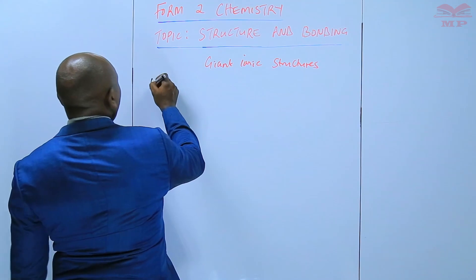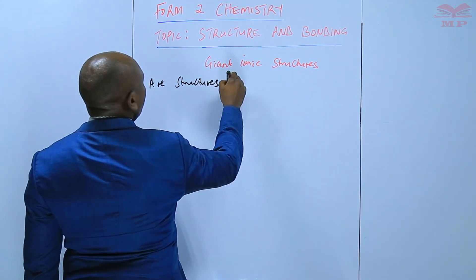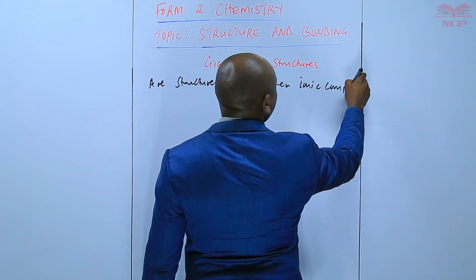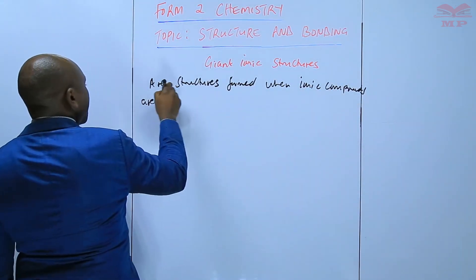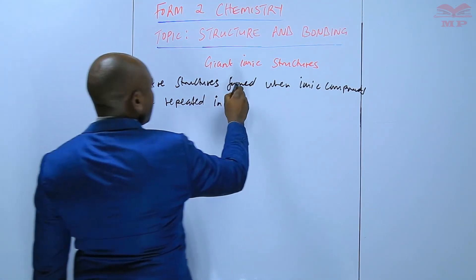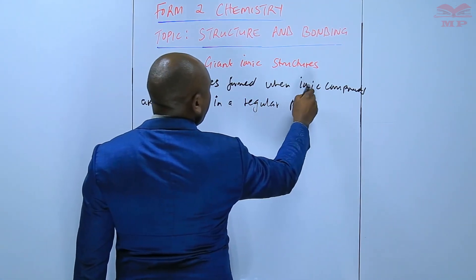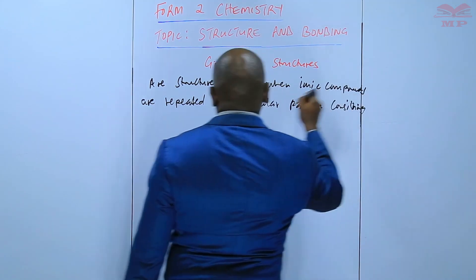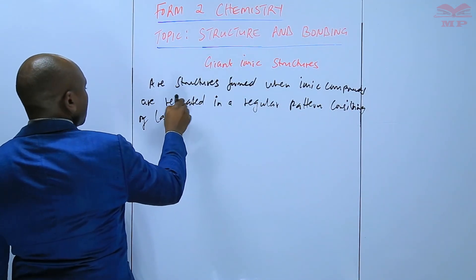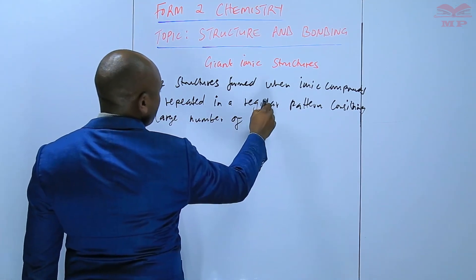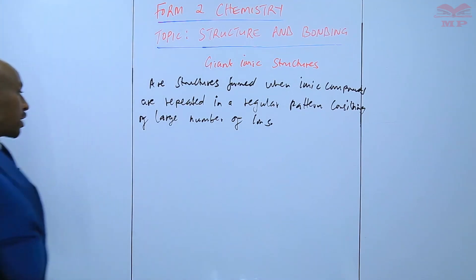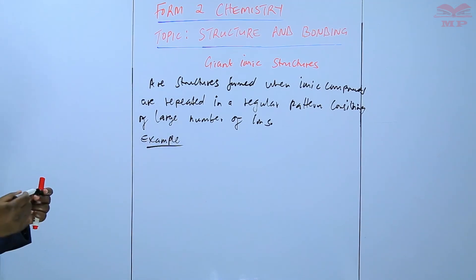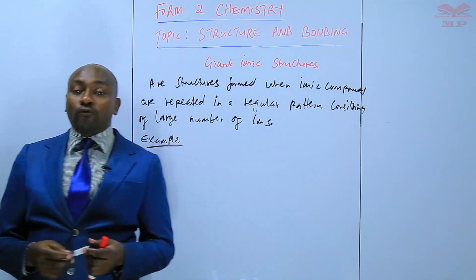So these are structures formed when ionic compounds are repeated in a regular pattern, a regular pattern consisting of a large number of ions. We are going to have an example of a giant ionic structure of sodium chloride.